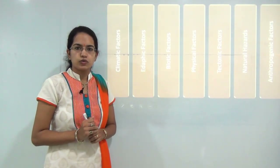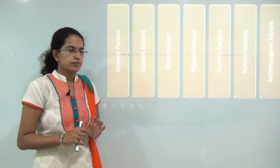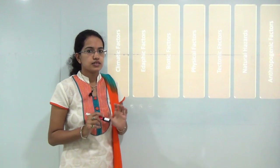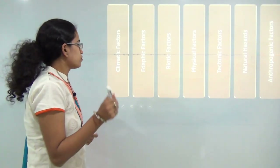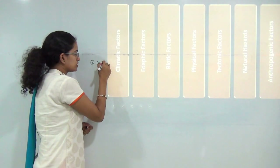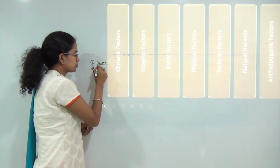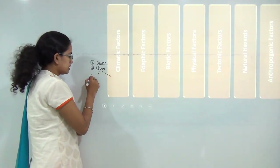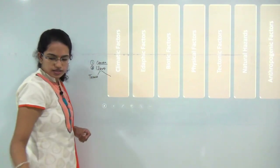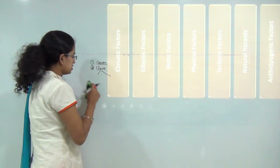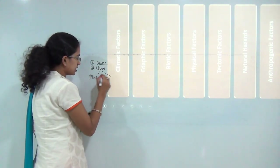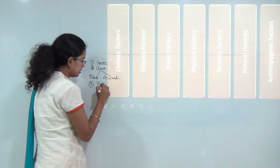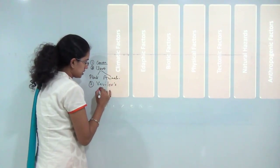Today we will be talking about the global distribution of plants and animals. This is one of the final topics in the section on biogeography. We will start with the causes of distribution, then move to classification of distribution — covering terrestrial distribution for plants, terrestrial distribution for animals, and finally the Vavilov gene center concept.